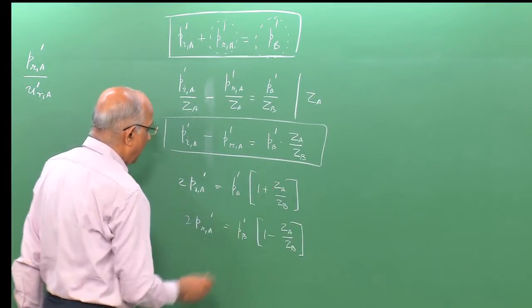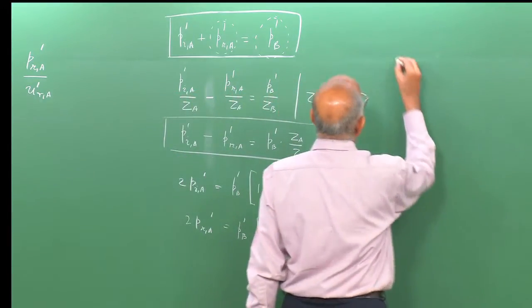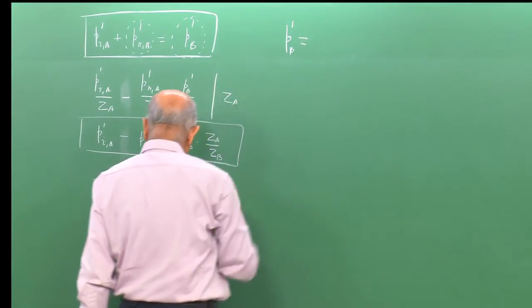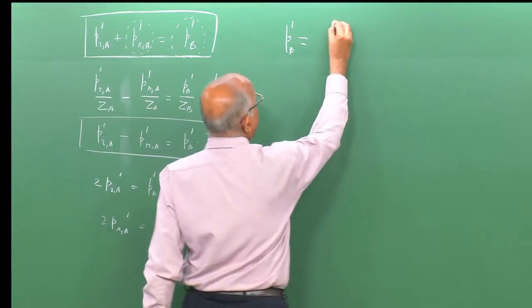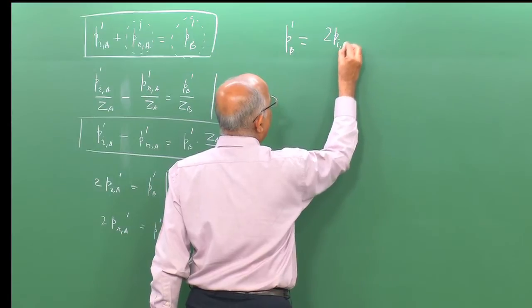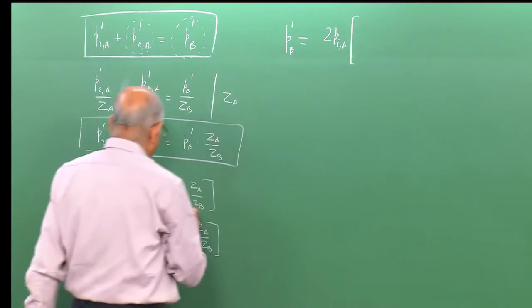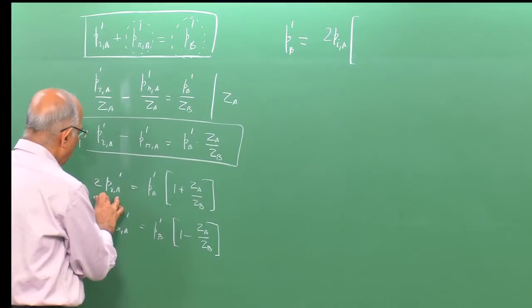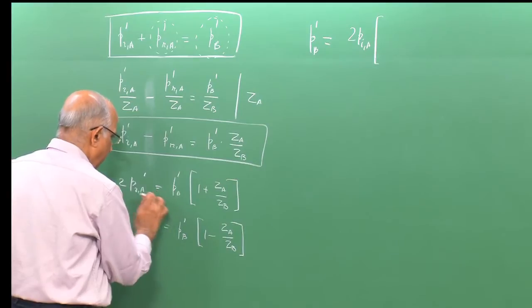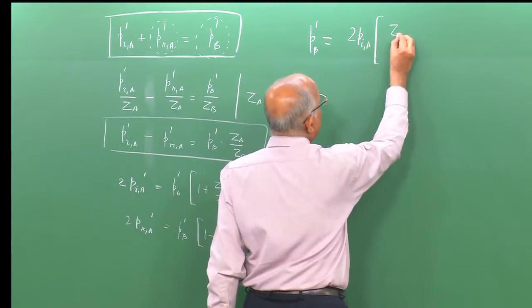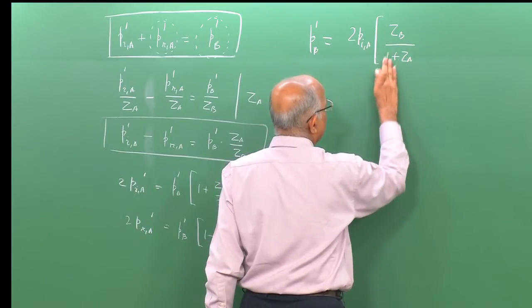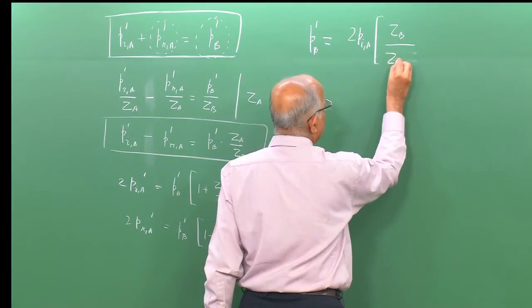From the addition equation, I get p_b prime = 2 p_ia prime × Z_b / (Z_b + Z_a). The transmitted pressure is the incident pressure multiplied by 2Z_b / (Z_b + Z_a).